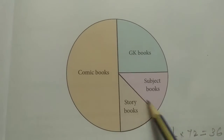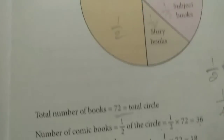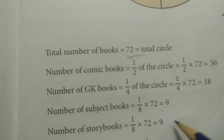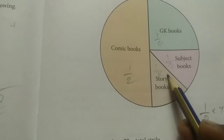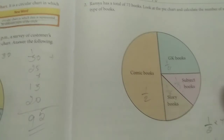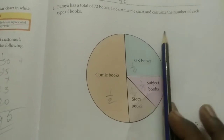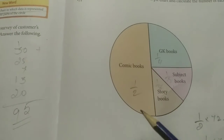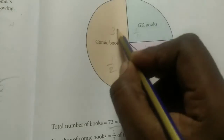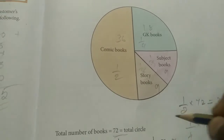The remaining two sections — Subject books and Story books — each take up one eighth of the circle. So: 1/8 × 72 = 9 for each. Therefore: Comic books = 36, GK books = 18, Subject books = 9, Story books = 9. This is how you calculate number of items from a pie chart using fractions.